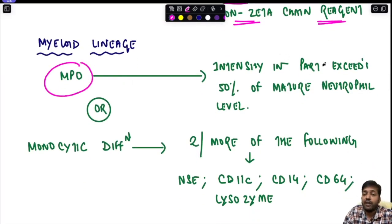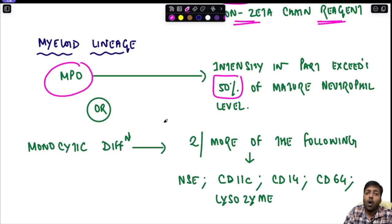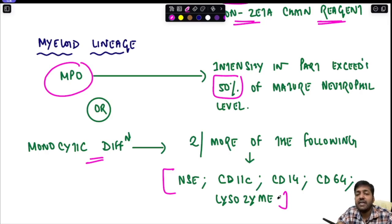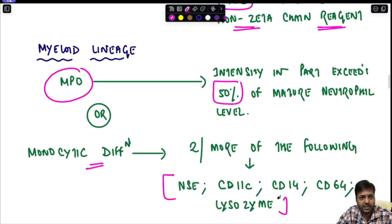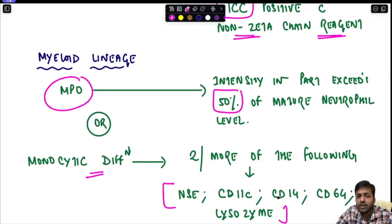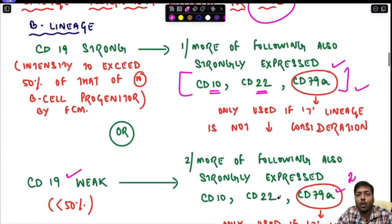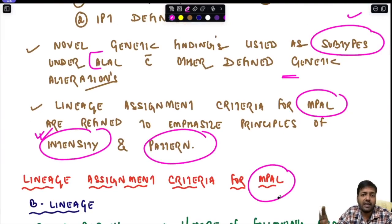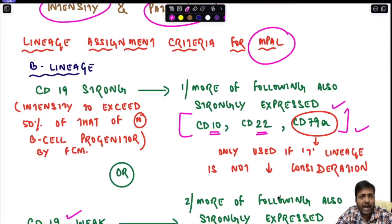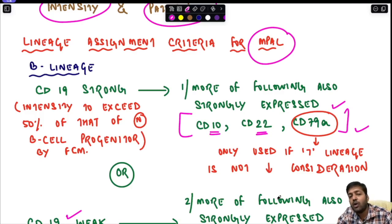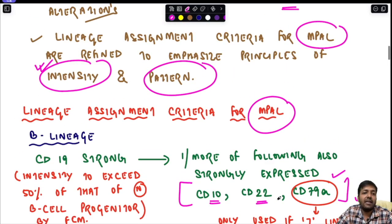For myeloid lineage, myeloperoxidase (MPO) positivity is required, with intensity exceeding 50% of the mature neutrophil level. Alternatively, if MPO is not positive, monocytic differentiation can be used: two or more of the following markers must be positive — neuron-specific enolase, CD11c, CD14, CD64, or lysozyme. So either MPO positivity or monocytic differentiation is required for myeloid lineage assignment.